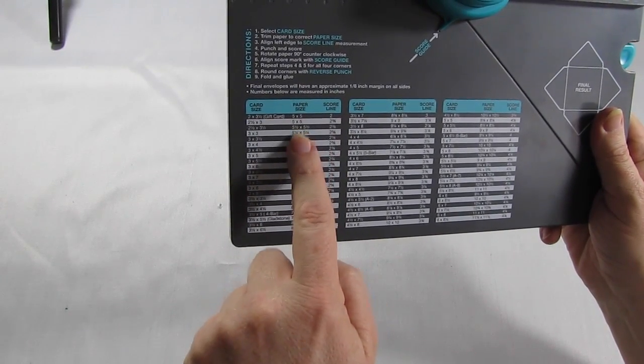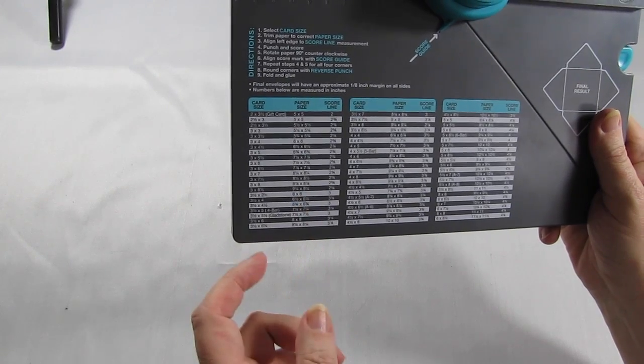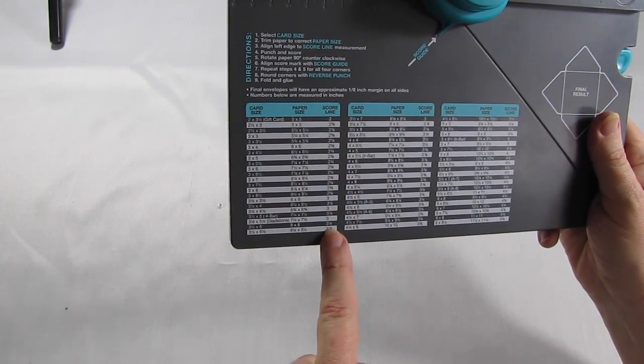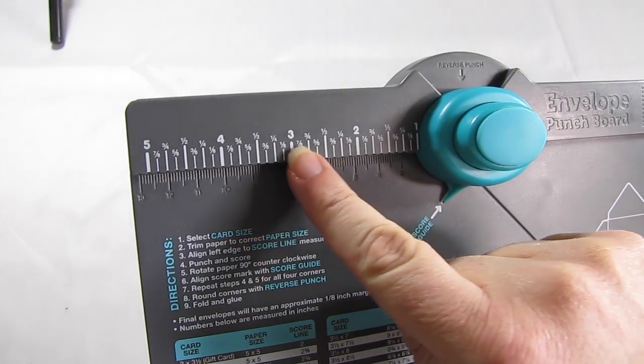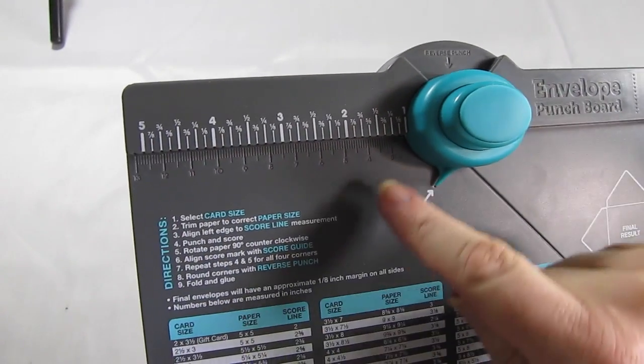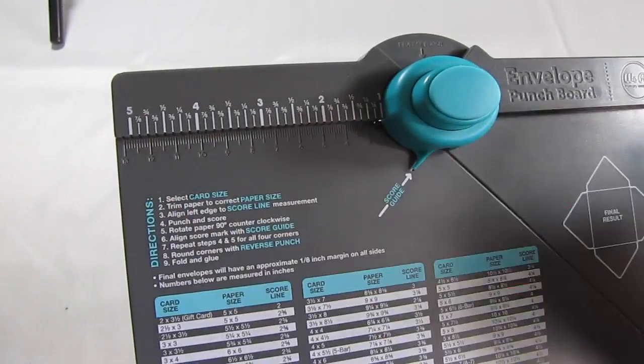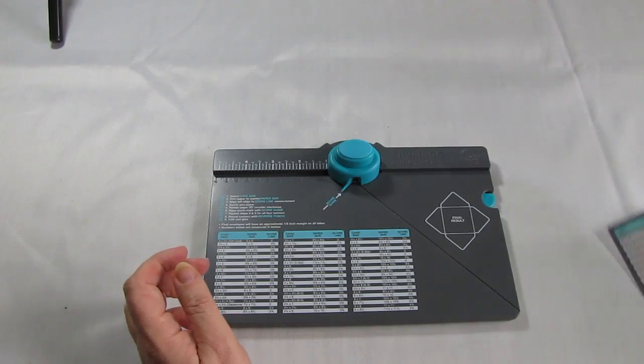The next one is the size of the material, card or paper, that you're going to make the envelope from and the next one is where the score line will be. Now along the top here you can see in inches and also below in millimeters a measurement, and that's where you align the paper up to for that score line.